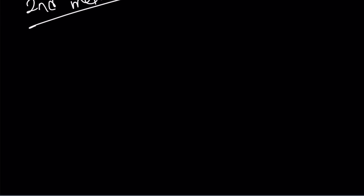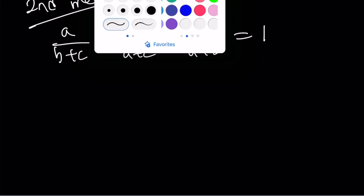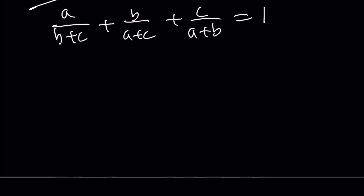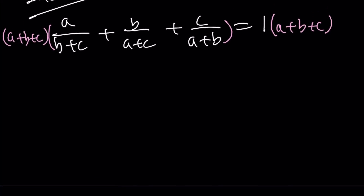Now let's talk about the second method, which is going to be shorter and less painful. We are given again that a/(b+c) + b/(a+c) + c/(a+b) = 1. Instead of making a common denominator, I'm going to multiply both sides by (a+b+c). When I distribute this, I'm going to distribute to a/(b+c) and it's going to look like (a² + a(b+c)) / (b+c). I want to leave it as is — you'll see why in a little bit.